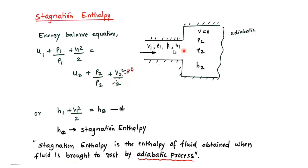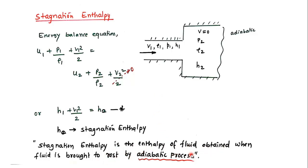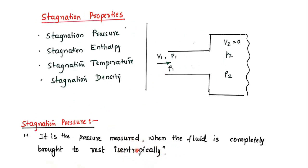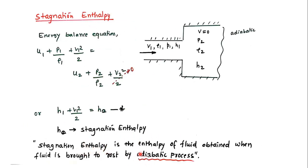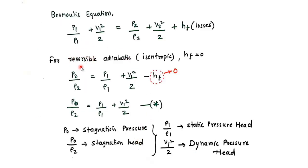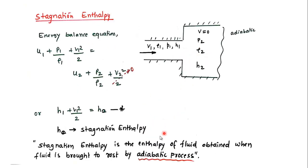The next stagnation property is stagnation enthalpy. Stagnation enthalpy is defined as the enthalpy of a fluid when it is brought to rest by an adiabatic process — not isentropic, just adiabatic. This means we allow friction but require no heat transfer. The reason we consider adiabatic is that the duct must be insulated — for example, in a steam turbine, the turbine and nozzle must be insulated, otherwise enthalpy is lost to the surroundings.